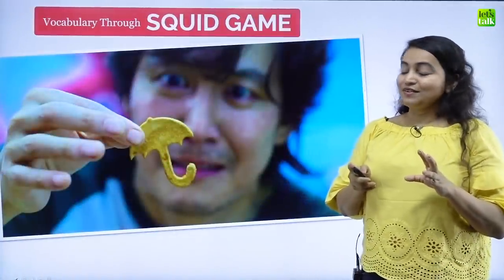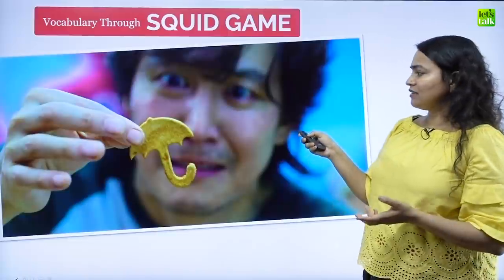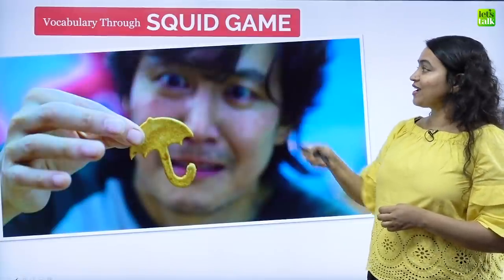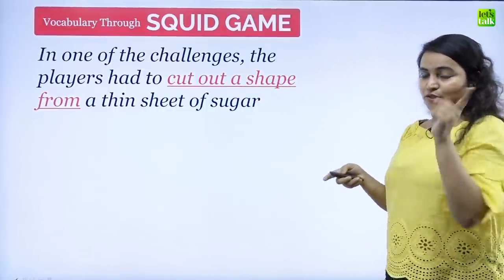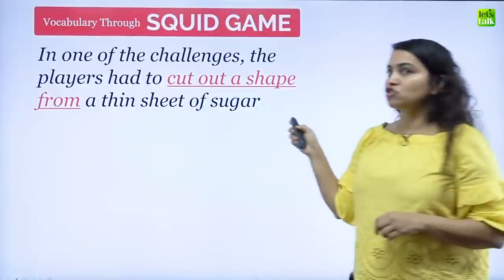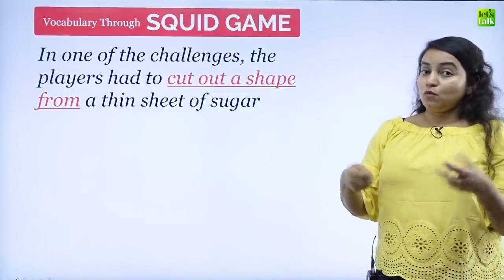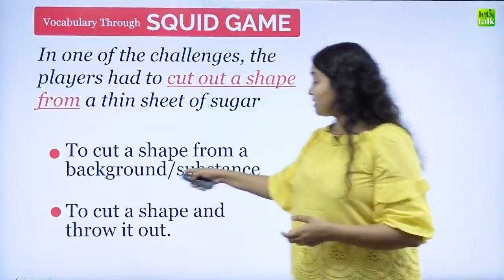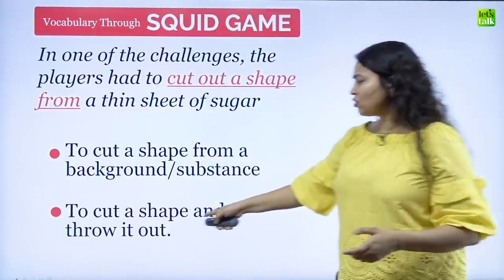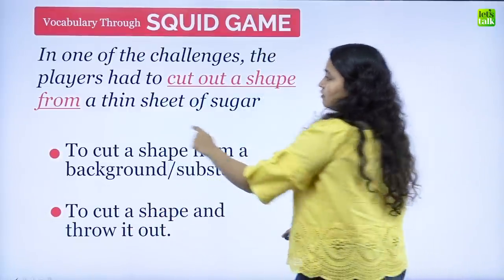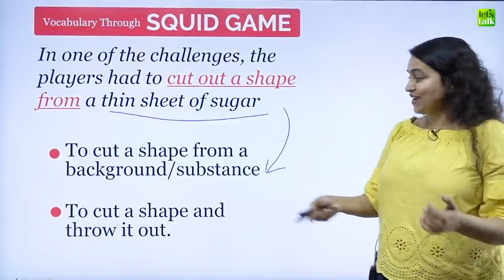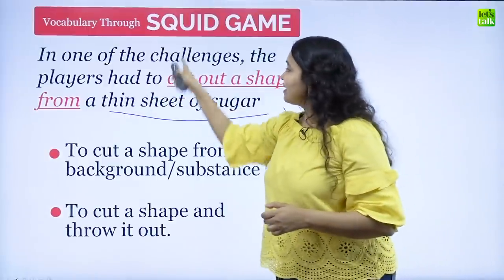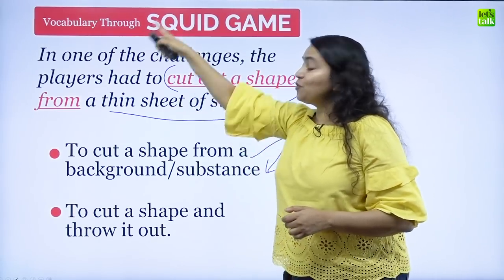Now the next sentence — you should be able to find the meaning by looking at the picture. In one of the challenges, the players had to cut out a shape from a thin sheet of sugar. So what does 'cutting out a shape' mean? Does it mean to cut a shape from a background or substance, or to cut a shape and throw it out? Your clue is 'a thin sheet of sugar' — that refers to a substance. Therefore, 'cut out a shape' means to cut a shape from a substance. You're inferencing the meaning based on the context words.